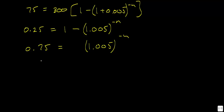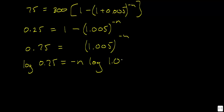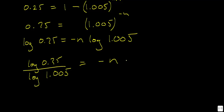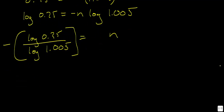I take the common log of both sides to isolate for n. Using the power law at the same time, I write: log of 0.75 equals negative n times log of 1.005. Dividing both sides by log of 1.005 gives log of 0.75 divided by log of 1.005 equals negative n. Multiplying both sides by negative 1 isolates n. Entering this into a calculator gives approximately 57.68 months, which rounds to 58 monthly payments.